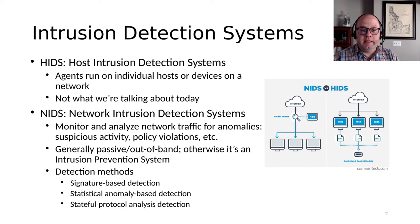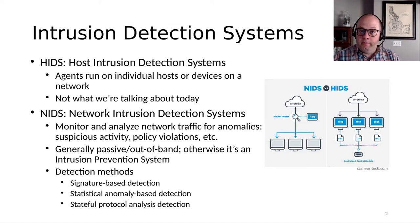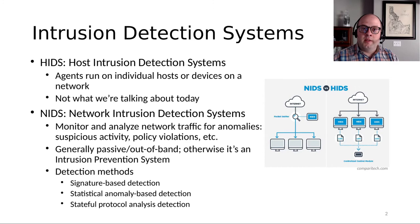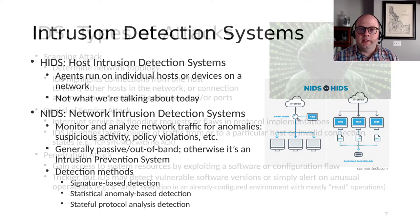One important point about IDS is it's generally passive, meaning it shouldn't alter the network traffic itself as a side effect of its analysis. Systems that actively drop suspicious traffic are called intrusion prevention systems or IPS. This is particularly important in networks with critical infrastructure. One of the focuses of Malcolm is industrial control systems or critical infrastructure networks with OT protocols, and it's important that IDS is done out of band in a way that won't influence the network traffic itself.